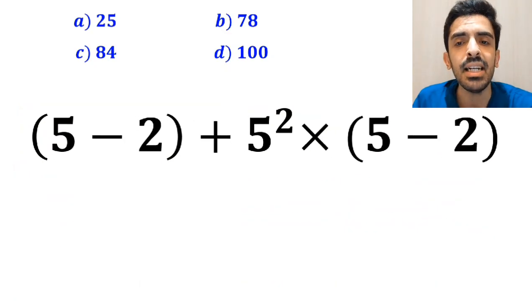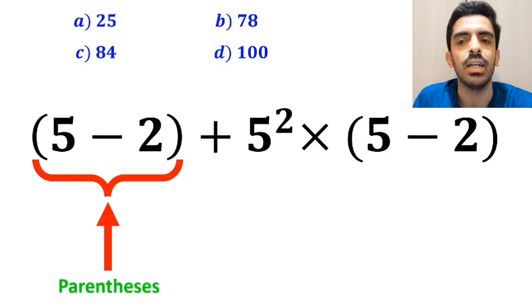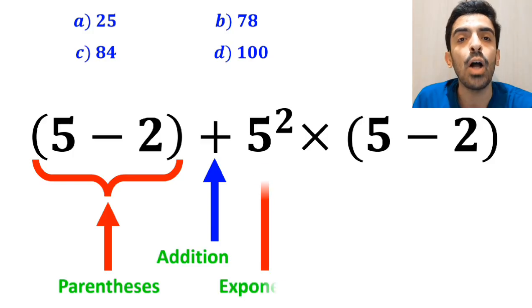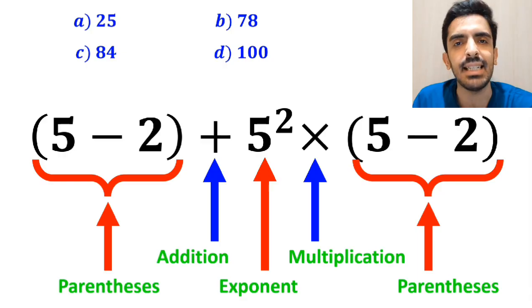As you can see on the screen, in this expression, first we have parentheses, then an addition sign, followed by an exponent, then a multiplication, and finally another parentheses.